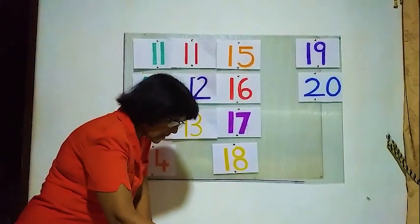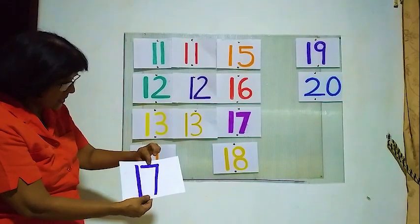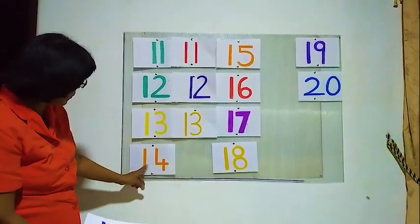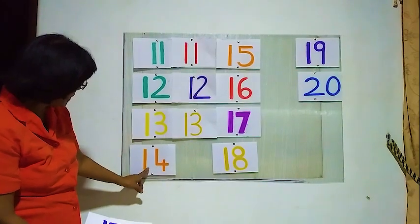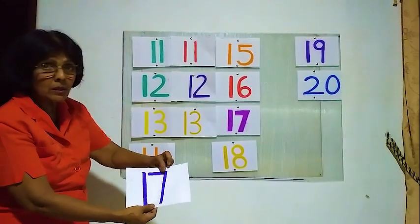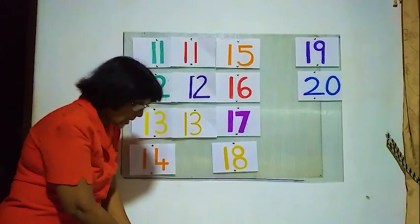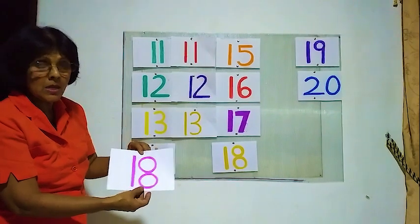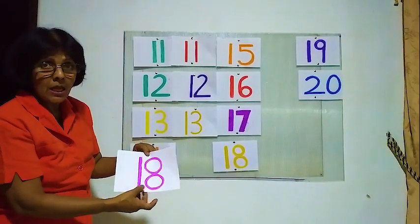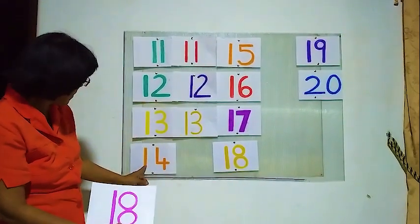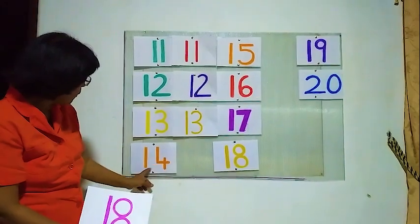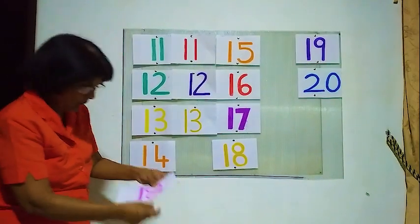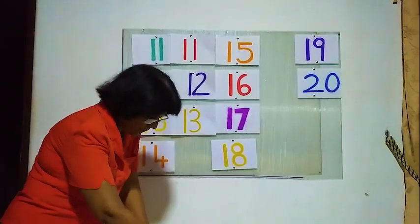We see this one. 1 and 7, 1 and 7 — this is 14? We have to find 1 and 4, this is 1 and 7 — not correct. And this one: 1 and 8, 1 and 8 — 18. Here 1 and 4 — 14. We have to find 14, this is wrong. So we see — here is 14.